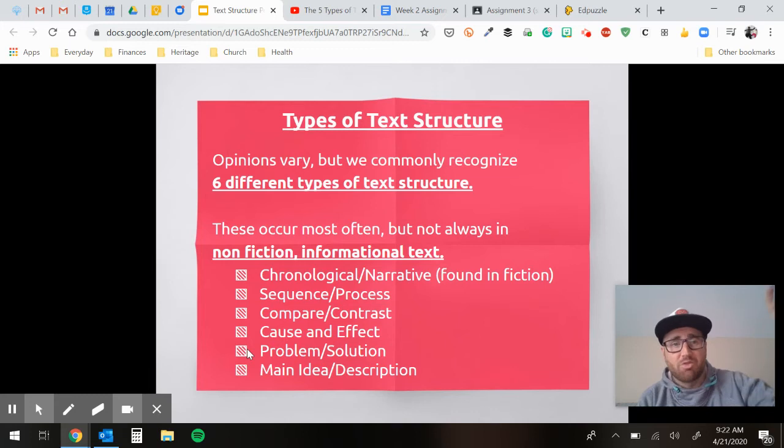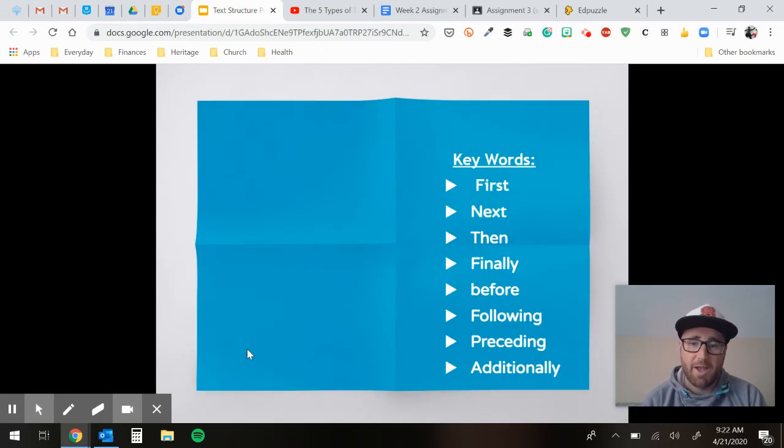You've got cause and effect. So this happened, which resulted in this happening. You've got a problem and solution. We present a problem and you give a solution. You guys wrote a problem and solution thing for your seventh grade writing assignment a couple of weeks before we fell into all this coronavirus stuff. Then you've got main idea and descriptions. They give you the main idea and then they describe what's going on with them.